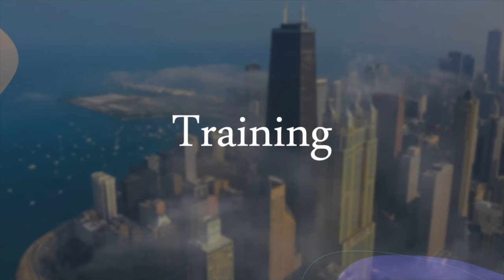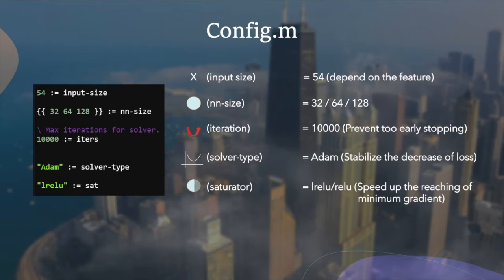Time to train. These are the configurations used for our simple network training. Input size is 54, which is dependent on the features we use. We also tried multiple neural network size because the test loss can vary in every trial.